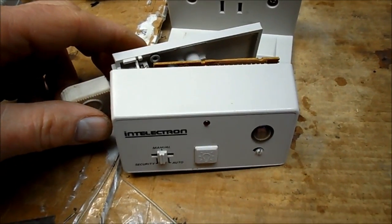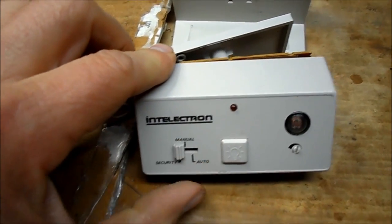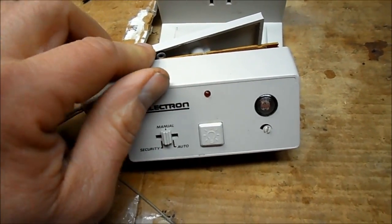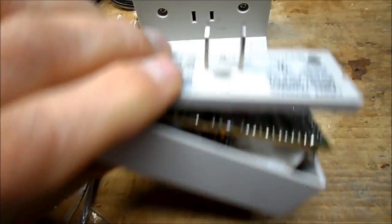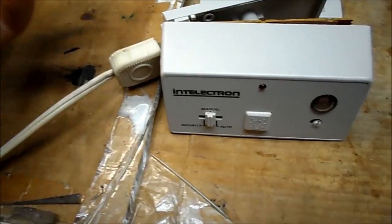It's called a timer, but I found this in a bin. And it has security manual auto, but red LED, light sensor, adjustable. And it plugs into this thing right here. And bring it home, plug a lamp into it.